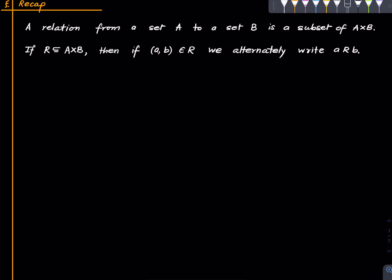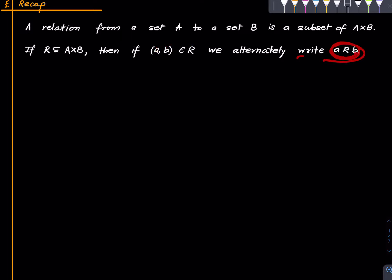If R is a subset of A cross B, meaning R is a relation from A to B, and if (a, b) is in R — meaning a is related to b via R — then one may alternately write a R b. That's just a piece of notation.